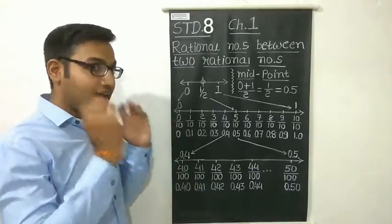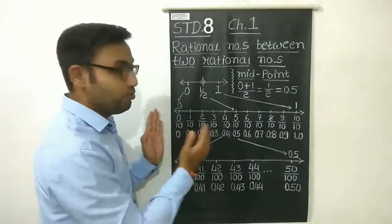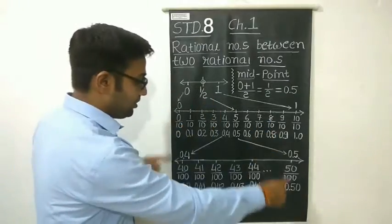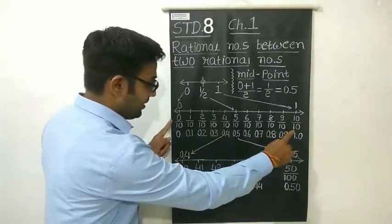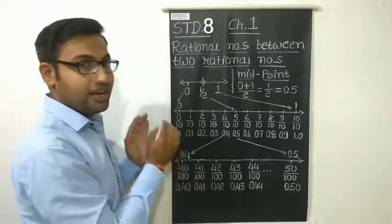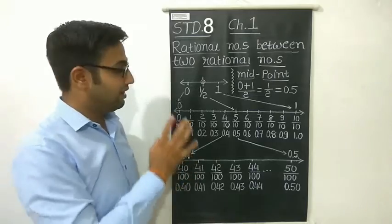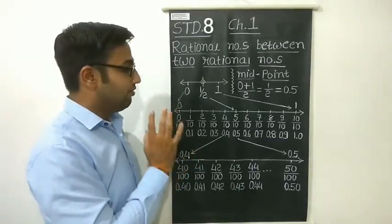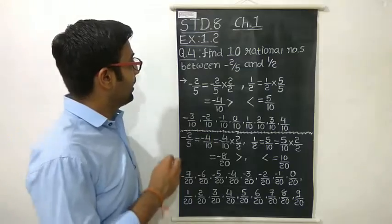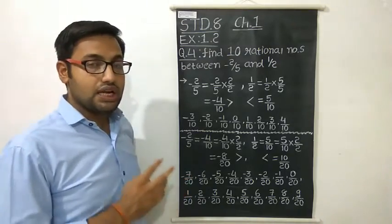Now you can think that there are infinitely many numbers between any two numbers. We started from 0 and 1 and got 10 numbers. If we magnify another portion, we again get 10 more numbers. So the concept is clear: we can find infinitely many numbers between two rational numbers. We will now study Exercise 1.2, Question Number 4. This is the topic of Standard 8, Chapter Number 1, Rational Numbers.